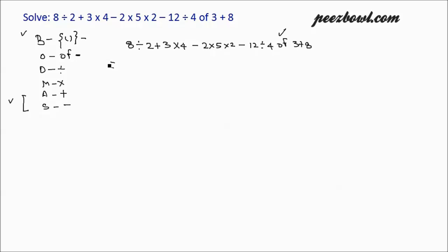Let us rewrite all these numbers again, and we are going to solve the of operation first. 4 of 3, that is 4 multiplied by 3, is 12 plus 8.